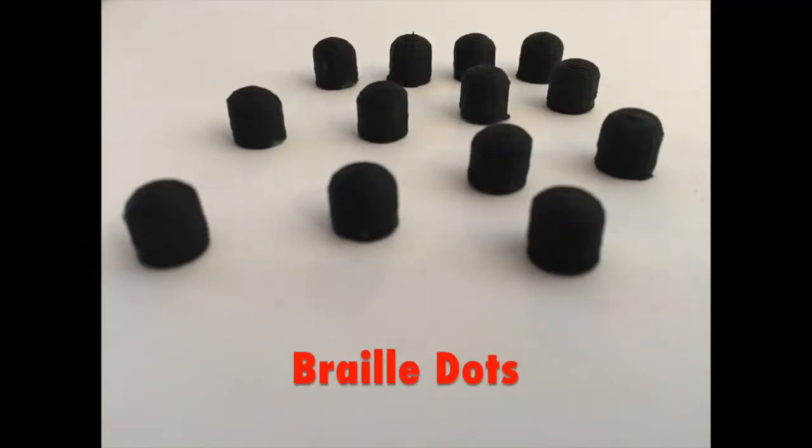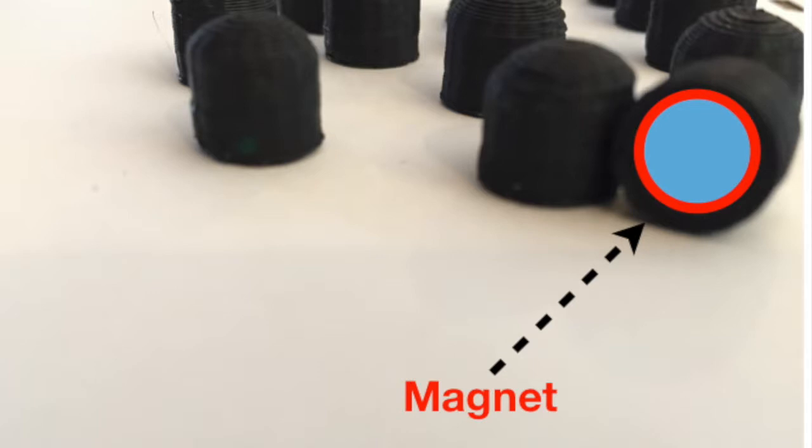Small columns with rounded tops were 3D printed to make the Braille dots used for the sheet. They have small magnets underneath to help secure them to the board.